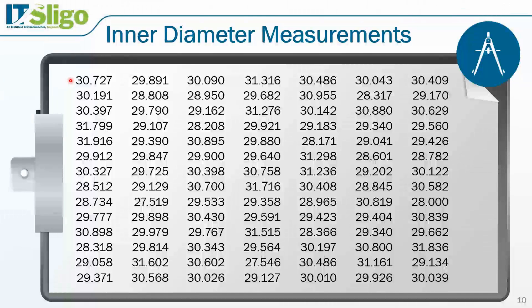The first part measured was 30.727 millimeters, the next was 30.191, then 30.397, and so on. We have a lot of data, and the question is: can we turn that data into information? We do that using descriptive statistics.